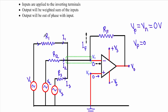In the input side we are applying three voltages V1, V2, and V3 with biasing resistances R1, R2, and R3. The region inside the green shaded region indicates the same node point. When we apply V1 at this terminal a current I1 will flow in this direction; when we apply V2 at this terminal a current I2 will flow in this direction; when we apply V3 at this terminal a current I3 will flow in this direction.